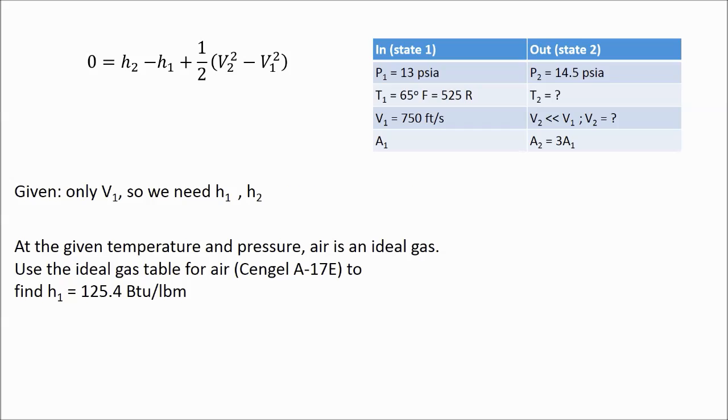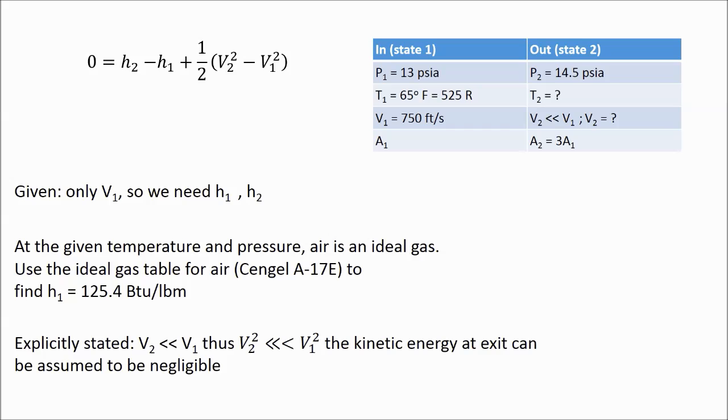At 65 degrees Fahrenheit and 13 psi, air is an ideal gas. Therefore, we can use the air ideal gas property tables to find the enthalpy of 125.4 BTU per pound mass. Note we did have to use interpolation to find that. If you need help with interpolation, you can see my video Introduction to Interpolation.